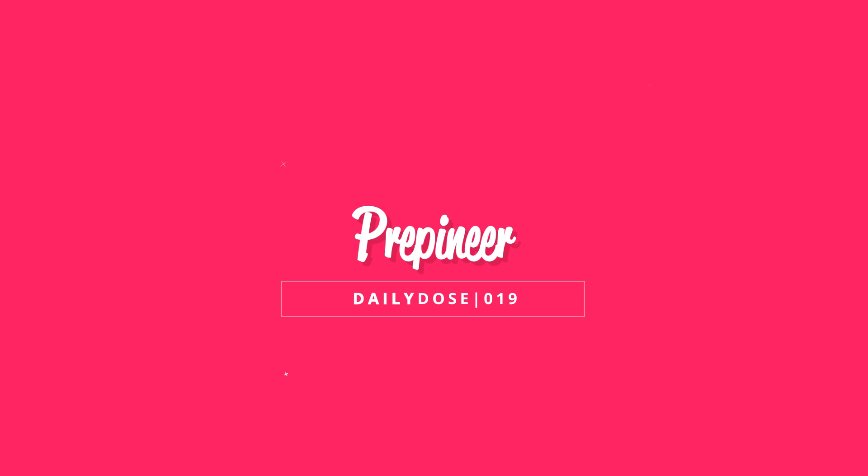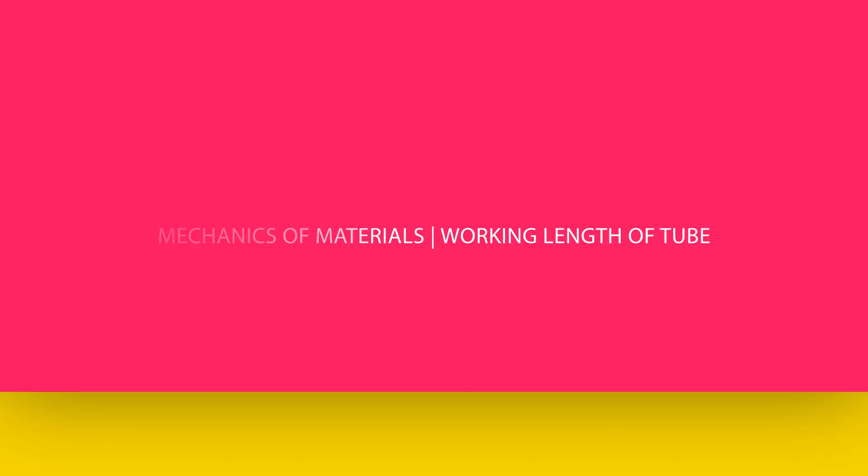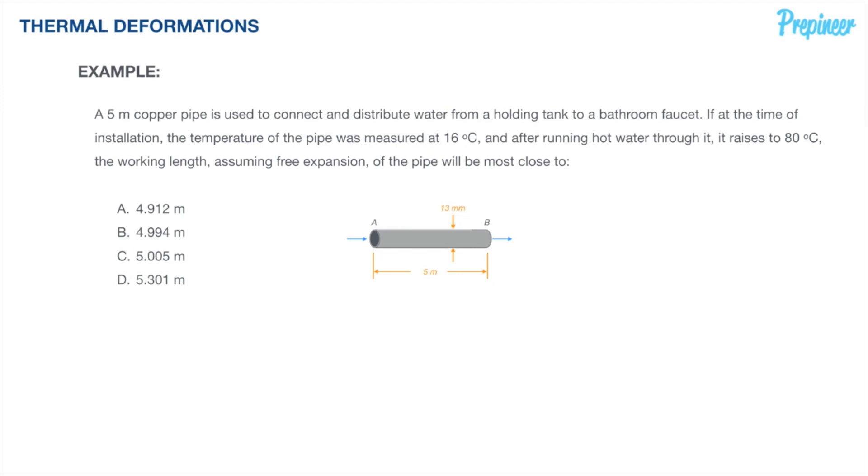This problem states a five meter copper pipe is used to connect and distribute water from a holding tank to a bathroom faucet. If at the time of installation the temperature of the pipe was measured at 16 degrees Celsius and after running hot water through it, it raises to 80 degrees Celsius.